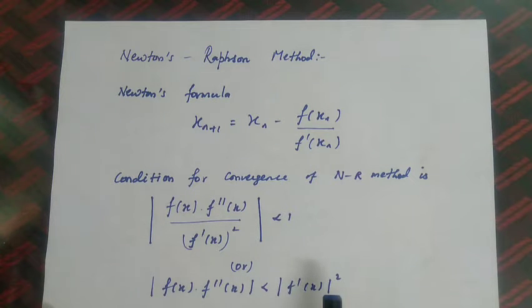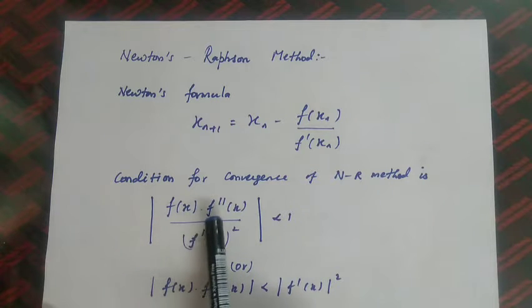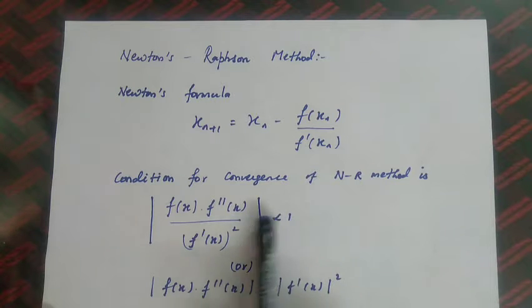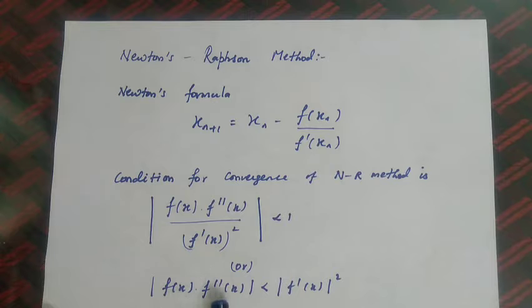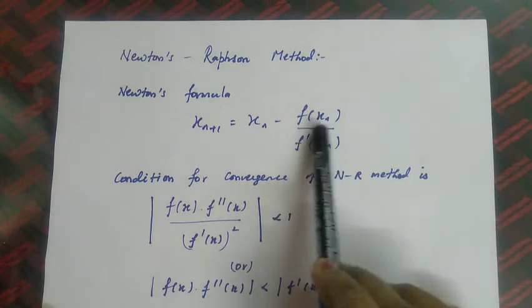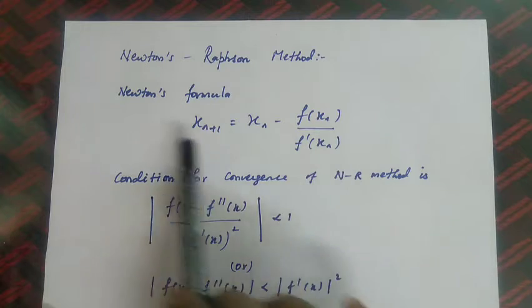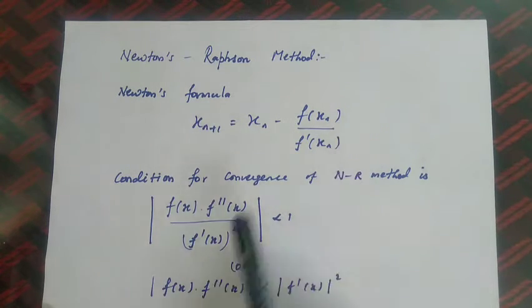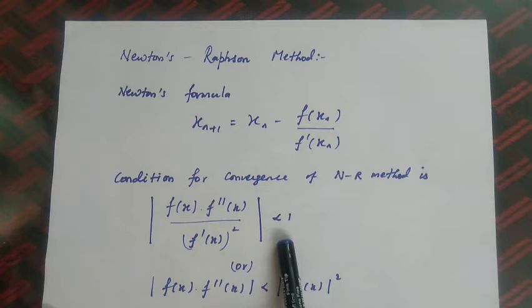The condition for convergence of the Newton-Raphson method is: |f(x) · f''(x)| / [f'(x)]² < 1, or equivalently, |f(x) · f''(x)| < |f'(x)|². The NR formula used for iteration is x_{n+1} = x_n - f(x_n) / f'(x_n).